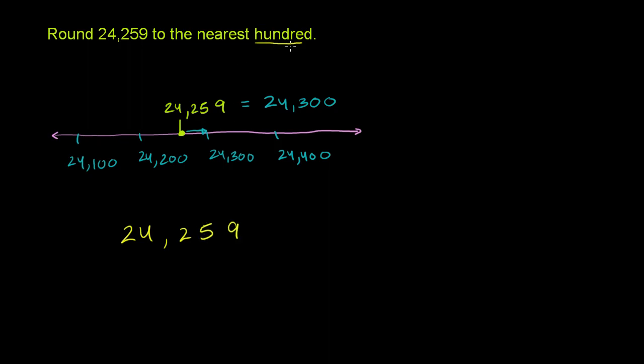24,259. We want to round to the nearest hundred. So you look at the hundreds place. This is the hundreds place right here. And when we round, that means we don't want any digits. We only want zeros after the hundreds place. So what you do is you look at the place one less than the place you're rounding to.